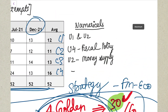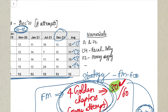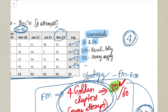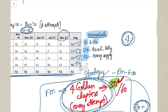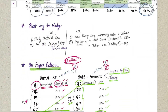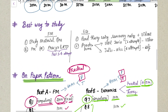For the most important units for numericals: in Chapter 1, Unit 1 and Unit 2; in Chapter 2, Unit 4; and in Chapter 3, Unit 2. These four units are the most important for your numericals and most of the questions are being asked from these four units only. Do these four units very well if you want to crack your numericals.